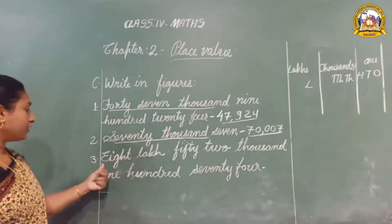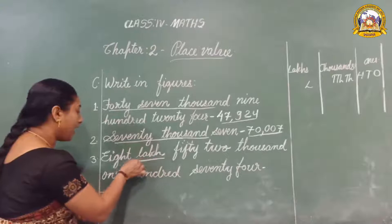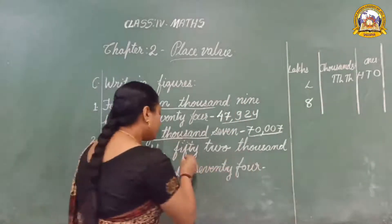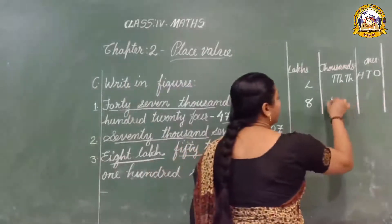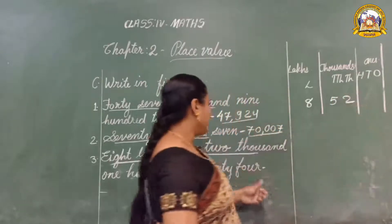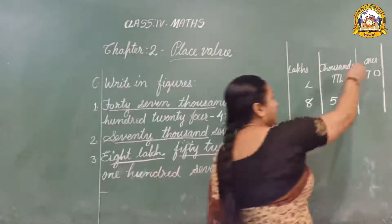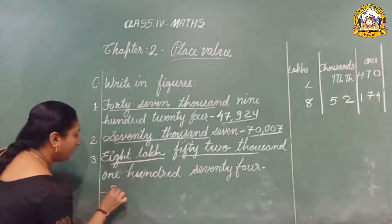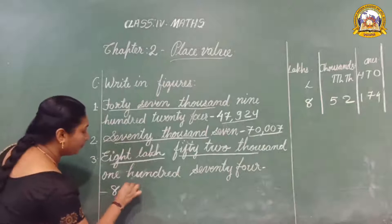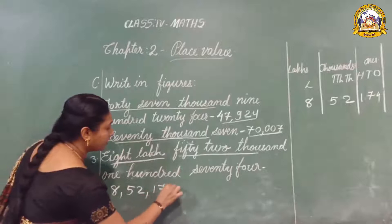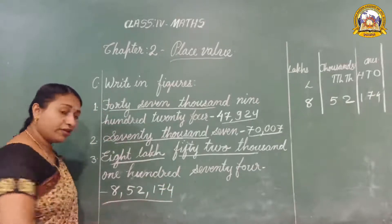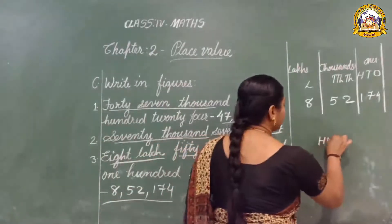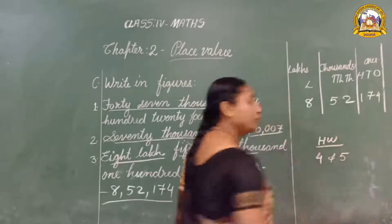The third number: here we can see lakh — 8,00,000. Then 52,000 — so under thousands, write 52. Then 174 — under hundreds, write 174. So the number is 8,052,174. The fourth and fifth numbers are homework — you should do those.